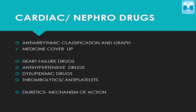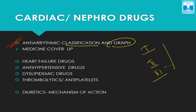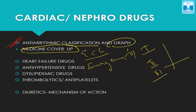Now coming to cardiac and nephro drugs — anti-arrhythmics is an important section. You need to know the classification and the graphs showing how class 1, class 2, and class 3 agents act and the changes they bring to heart rates. Cross-check with ECG topics in emergency medicine alongside anti-arrhythmic classification — that way, if a question provides an ECG and asks for the drug of choice, you can answer easily. A cross-subject review is required for this topic.